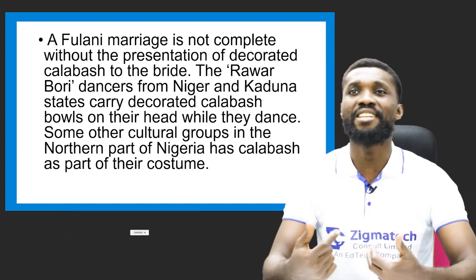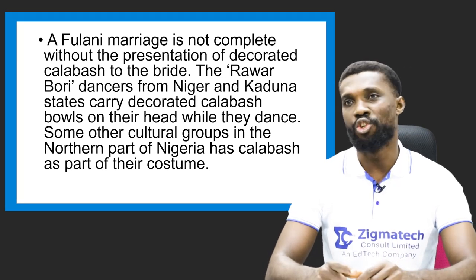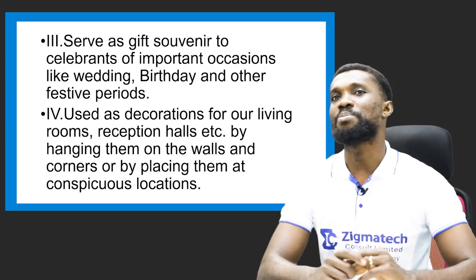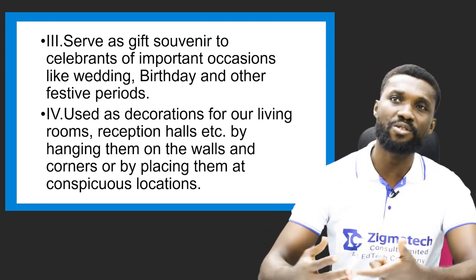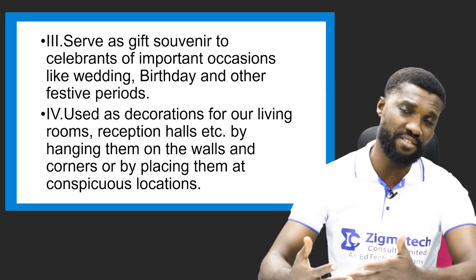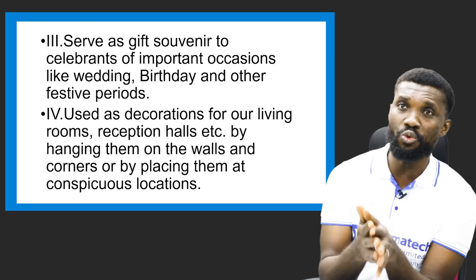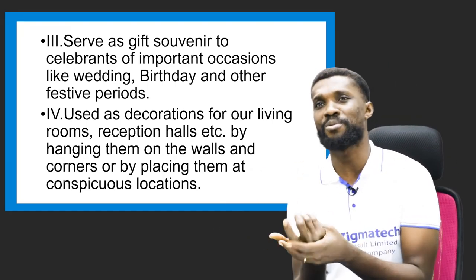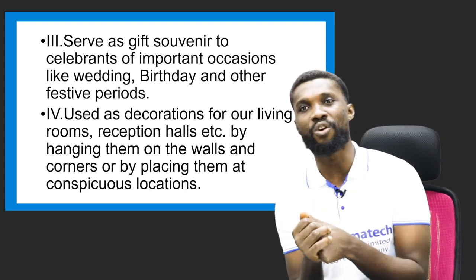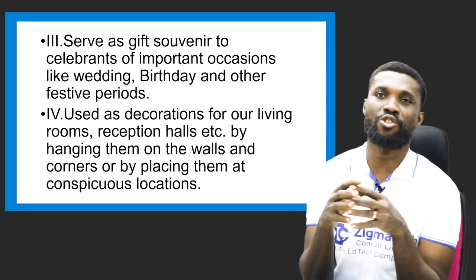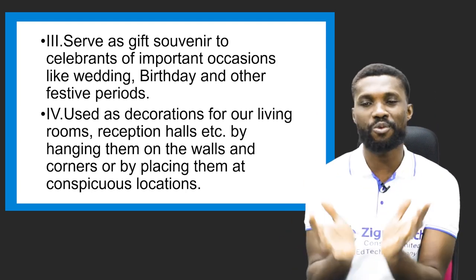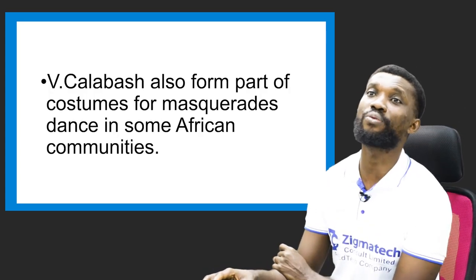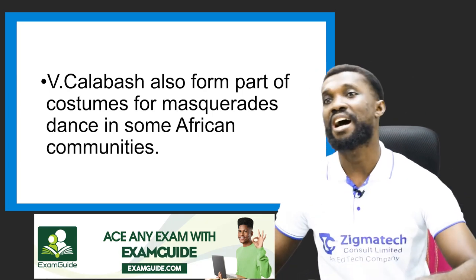Some other cultural groups in the northern part of Nigeria have calabash as part of their costumes when dancing. The use of calabash cannot be overemphasized. Some calabashes serve as gifts and souvenirs for celebrants of important occasions like weddings, birthdays, and other festival periods. It is also used as decoration for living rooms — as lamps, in reception halls — by hanging them on the wall or placing them at conspicuous locations. Calabash also forms part of costume for masquerade dance in some parts of African communities.